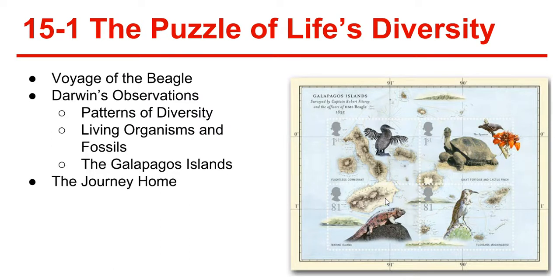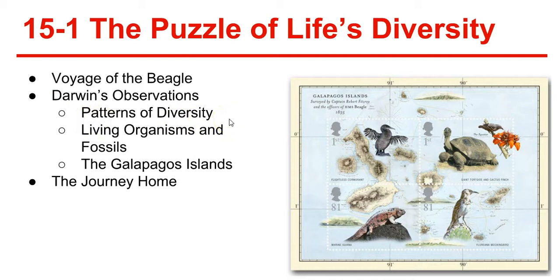With these observations, he was led to propose a revolutionary hypothesis about the way life changes over time. That hypothesis, now supported by a huge body of evidence, has become the theory of evolution. Darwin knew a great deal about the plants and animals of his native country, but he saw far more diversity during his travels. He was intrigued by the fact that so many plants and animals seemed remarkably well-suited to whatever environment they inhabited, and he wondered if there was a process that led to such a variety of ways of reproducing.